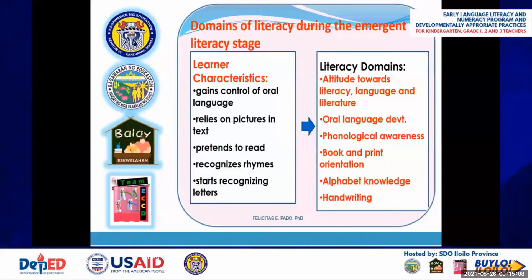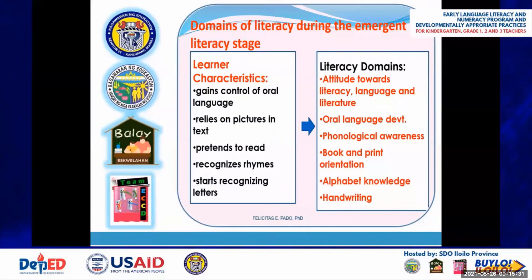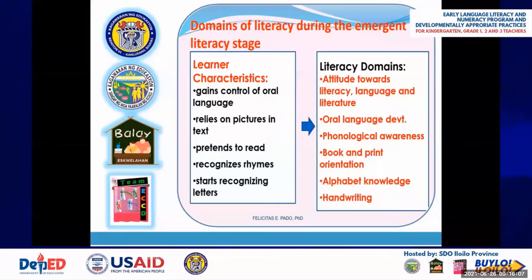After knowing the learner's characteristics at every stage of reading development, let us see what literacy domains are expected for each learner to achieve. At the emergent literacy stage, the learner gains control of oral language, relies on pictures and text, pretends to read, recognizes rhymes, and starts recognizing letters. They are expected to develop attitude towards literacy, language, and literature; oral language development; phonological awareness; book and print orientation; alphabet knowledge; and handwriting.